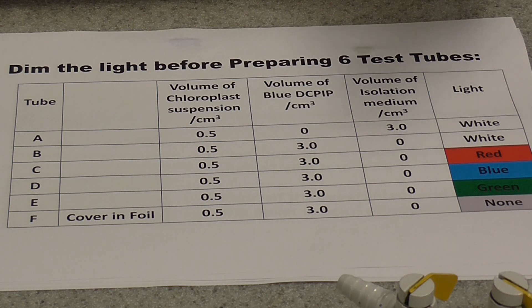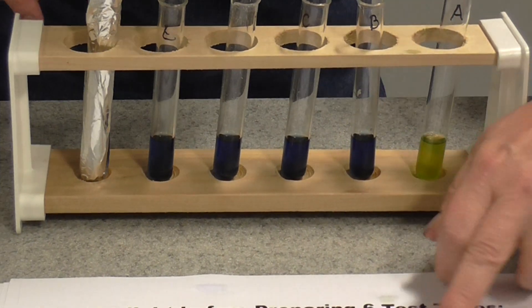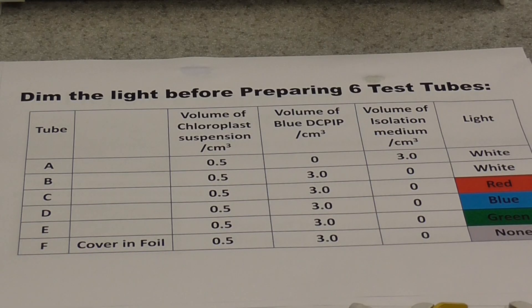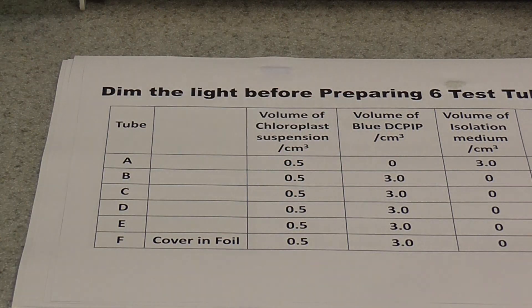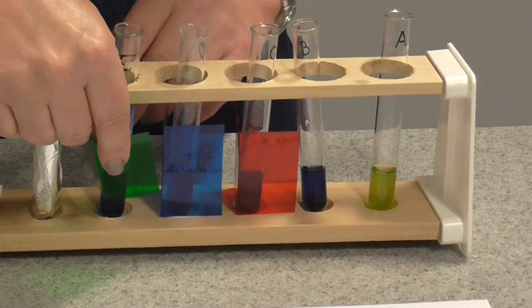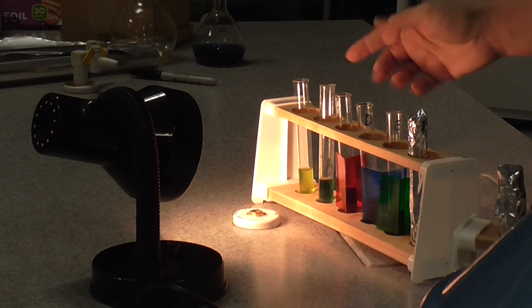We're now going to vary the light the tubes are exposed to. Tube A is for comparison with no DCPIP. Tube B is exposed to white light. Tubes C, D, and E are exposed to different coloured lights — a very easy way to do this is to buy coloured filters and make them into little tents, then sit them in front of the tubes. Position the tubes in front of a bench lamp and start the timer.